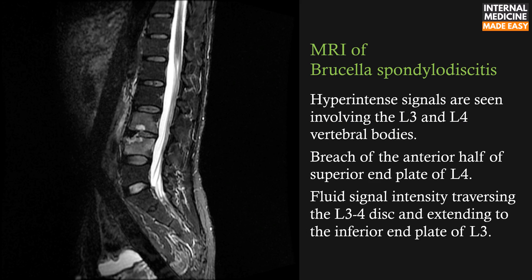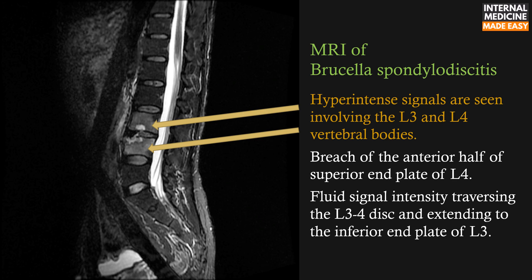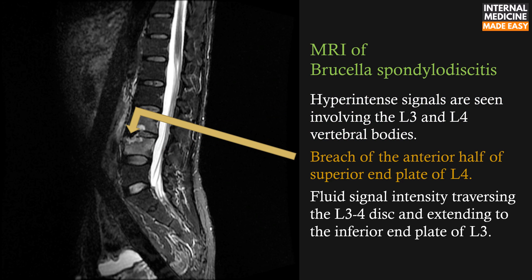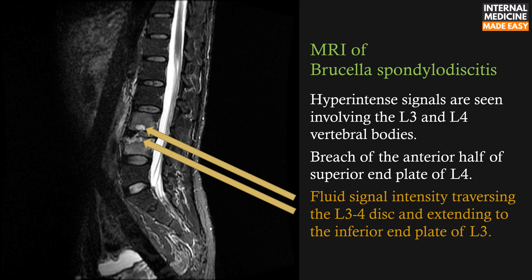This is an MRI of Brucella spondylodiscitis. Hyperintense signals are seen involving the lumbar 3 and lumbar 4 vertebral bodies. There is bridging of the anterior half of the superior end plate of lumbar 4. There is a fluid signal intensity traversing the lumbar 3 to lumbar 4 disc and extending to the inferior end plate of lumbar 3.